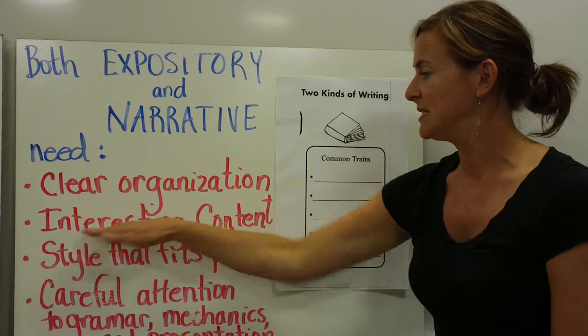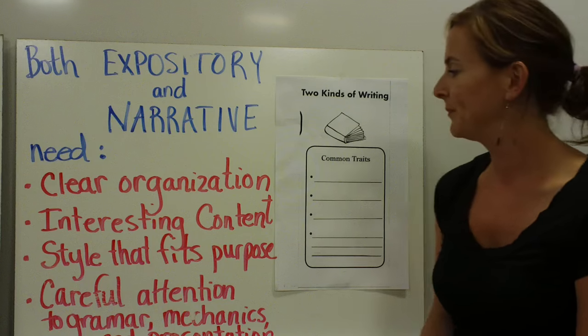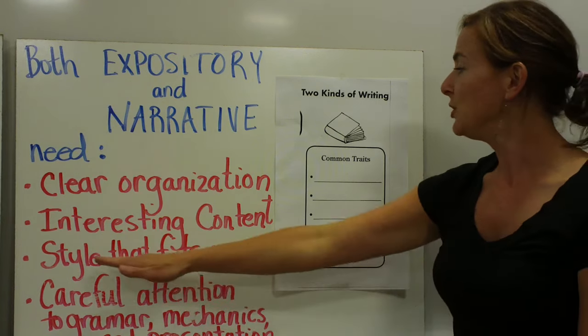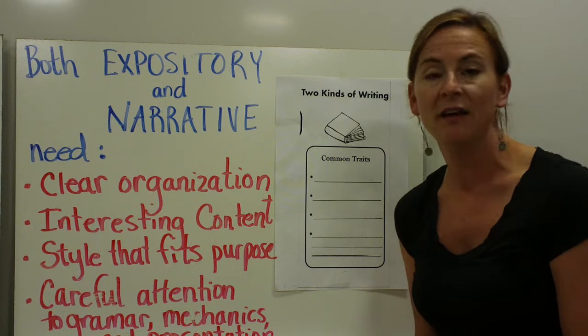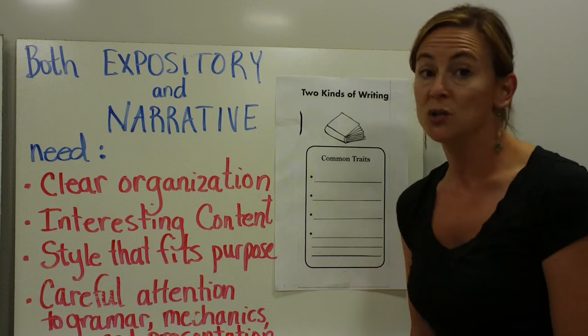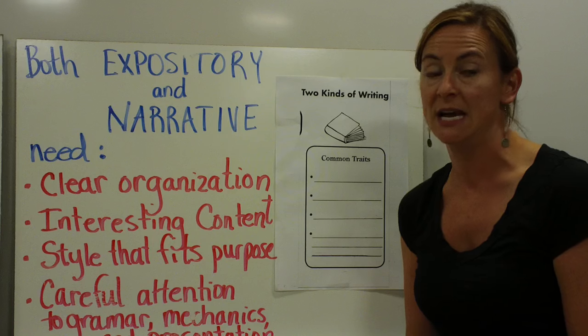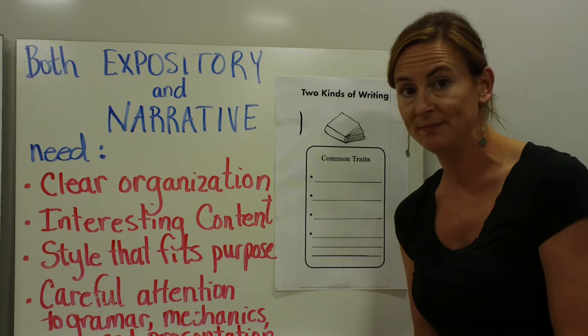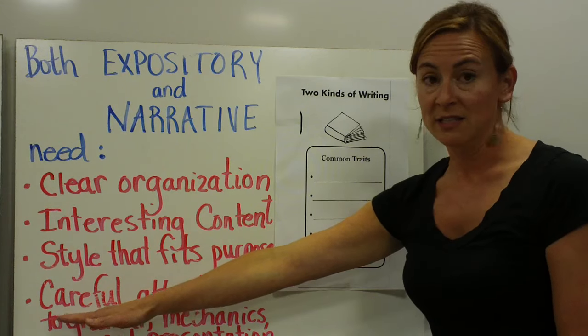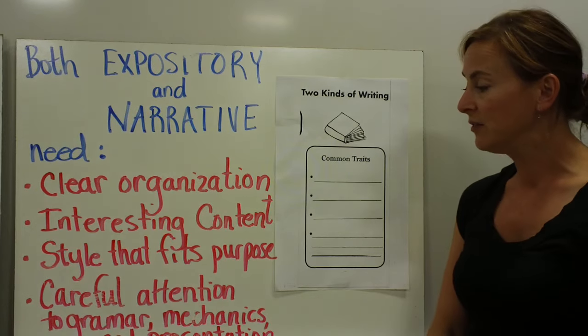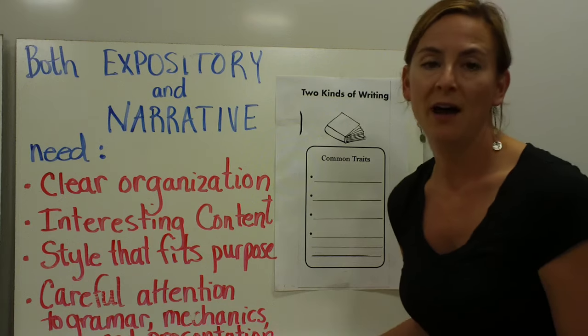Both expository and narrative pieces need to have interesting content, or why would we even want to bother reading them? A third common trait is that expository and narrative pieces need to have a style that fits its purpose. So, a textbook expository piece is going to be organized differently than, say, a magazine article or a newspaper article. And last, both expository and narrative pieces need to pay careful attention to grammar, mechanics, and how they are presented.